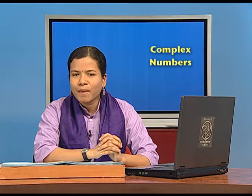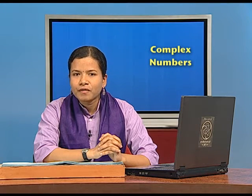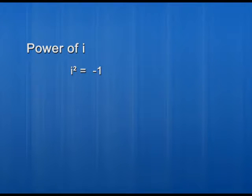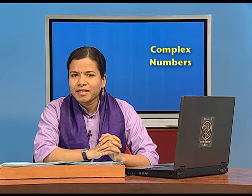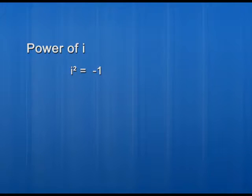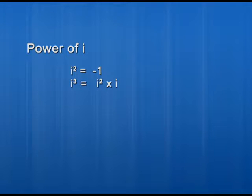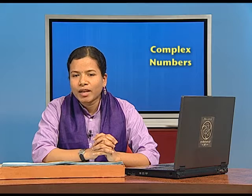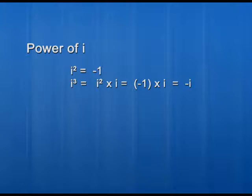Now let us come to the powers of i. We already know that i squared equals minus 1. Now we will increase the power of i and find the values. For i to the power 3, we write it as i squared times i, which is minus 1 times i, giving us minus i. For i to the power 4, it can be written in terms of i squared, which gives us the value 1.